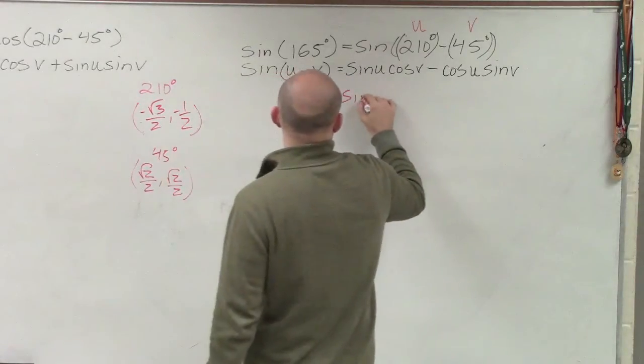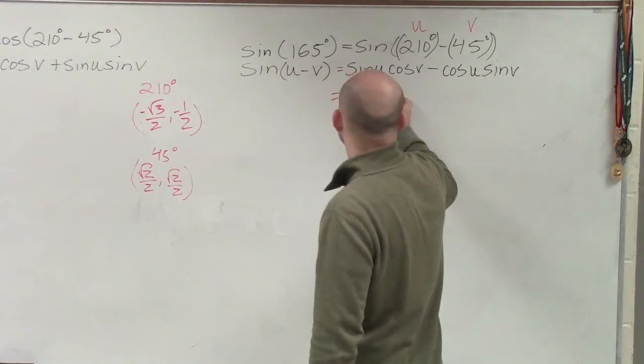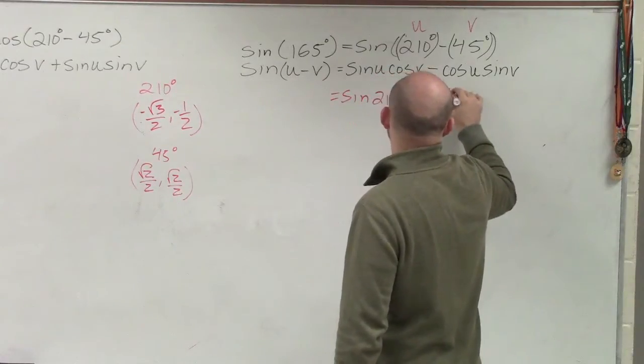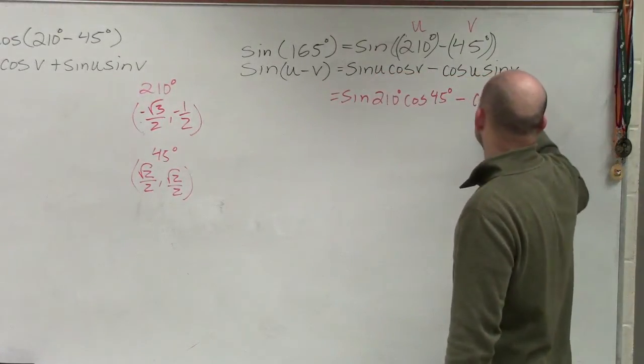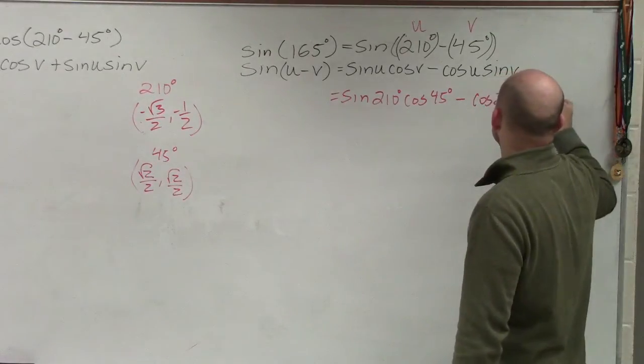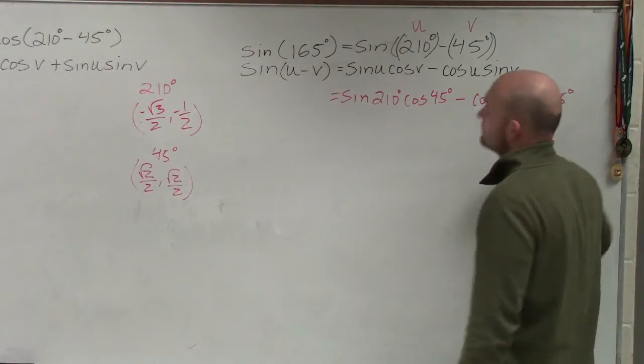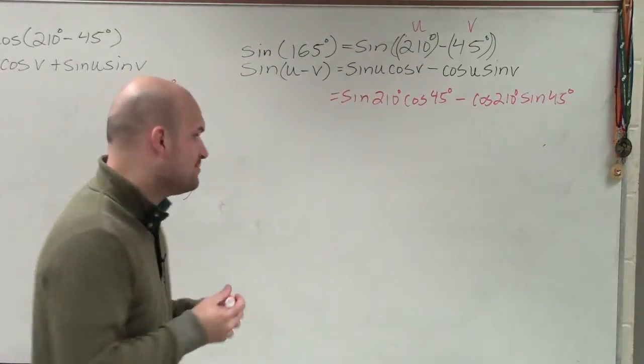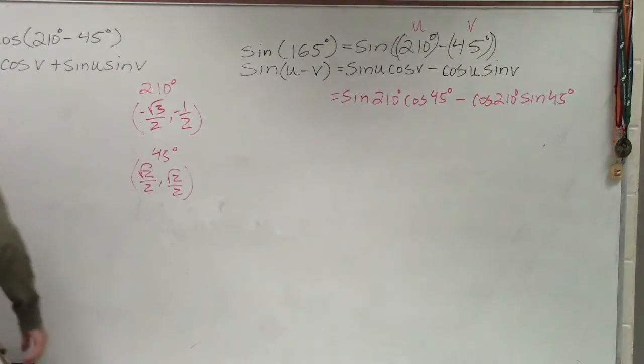So really, what you're doing is the sine of 210 degrees times the cosine of 45 degrees minus the cosine of 210 degrees times the sine of 45 degrees. So you can label your two angles, u and v, and then simply plug them into the formula. Now, when we go and do this,